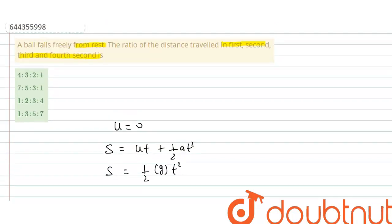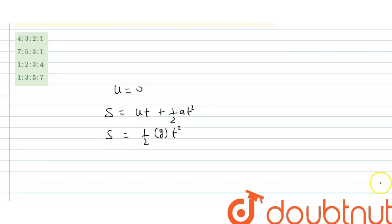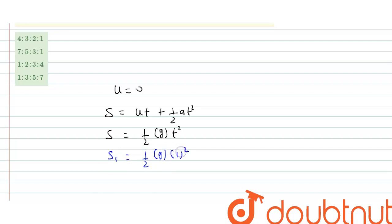Distance travelled by the body in the 1st second: S₁ = ½ × g × 1² = ½g.